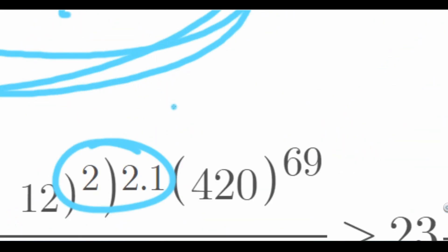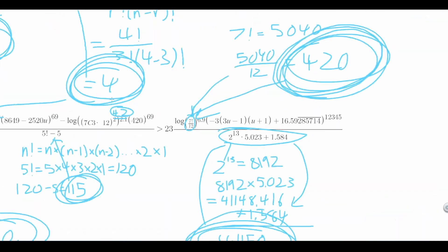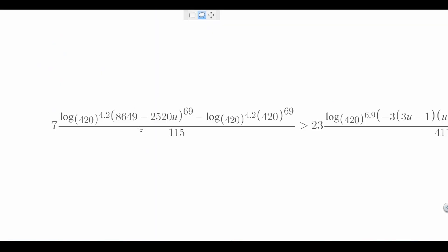Lastly, we can simplify this exponent. Since this is the number to the power of 2 to the power of 2.1, this would be the same as the number to the power of 2 times 2.1, which equals 4.2. Now let's look at what we have now.